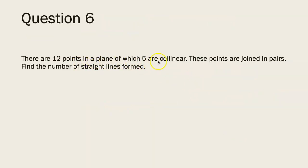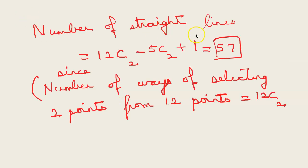There are 12 points in a plane of which 5 are collinear. These points are joined in pairs. Find the number of straight lines formed. Number of straight lines is 12C2. That is you are selecting at a time 2 points, if you join you get a line. So you get 12C2. Now 5 points are collinear, so they just form 1 line. That is plus 1 here.